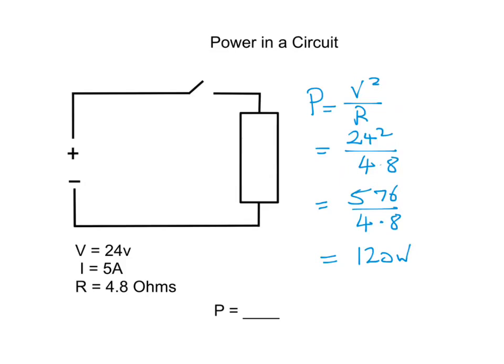Therefore, using all three formulas, we can say the total power of this circuit is 120 watts. Remembering, all working must be shown and the units must be shown as well.